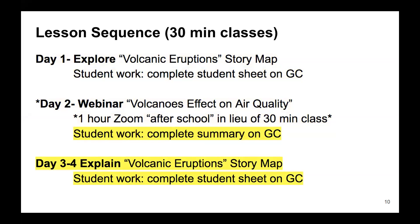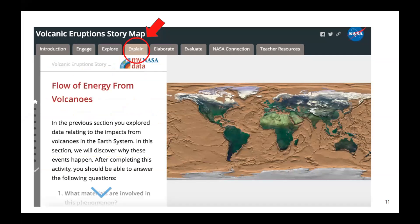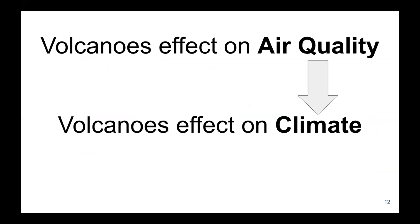After the webinar, students submitted a summary about what they learned and what questions they still had. In the days following, students continued to complete the activities under the explain tab, which went deeper into plate tectonics, volcano formation, and volcano hazards using a variety of interactive maps, images, and videos. There's a nice variety of ways to engage with the data, which is really laid out nicely on the story map. It's here that students learned about how sulfate aerosols affect climate. My main reason for turning to this resource was to support student engagement in the webinar on volcanoes' effect on air quality, but I then saw an opportunity to build on my class theme for the year, which was climate change.